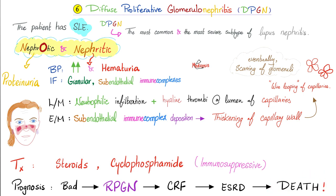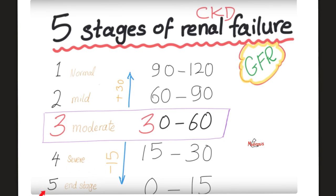I'm trying to make medicine easy for medical students so that you can help patients. End-stage renal disease is when your GFR is less than 15 ml per minute. Normally it should be 125 — this is critically low.